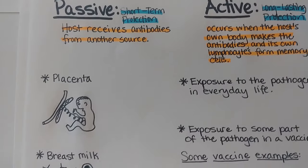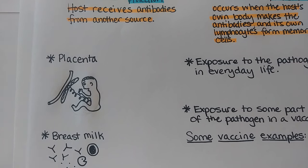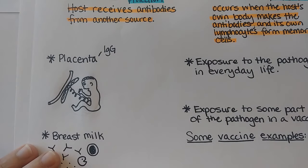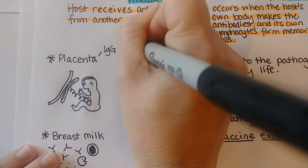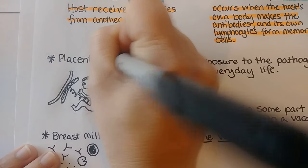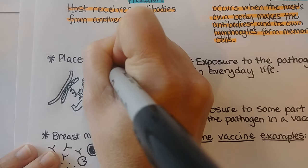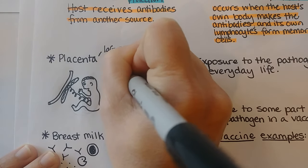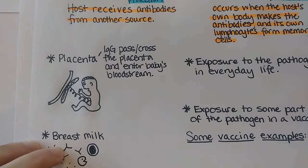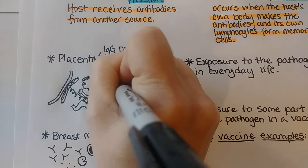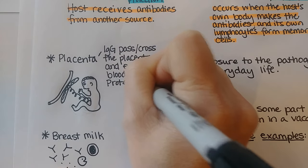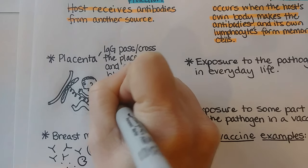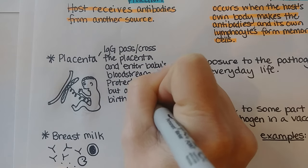The first example of passive immunity is via the placenta. IgG antibodies — the ones that circulate in the mother's bloodstream — cross the placenta and enter the baby's bloodstream. This happens most in the third trimester of pregnancy, and it will protect the baby while in utero and also after birth during infancy.